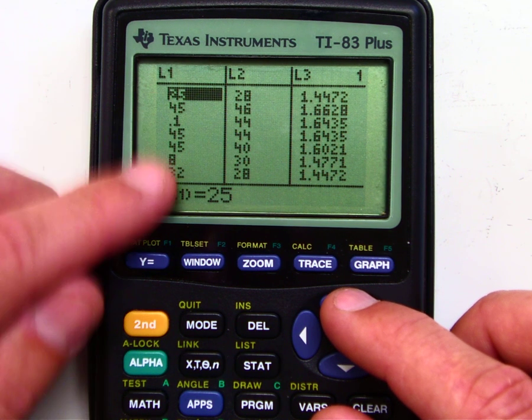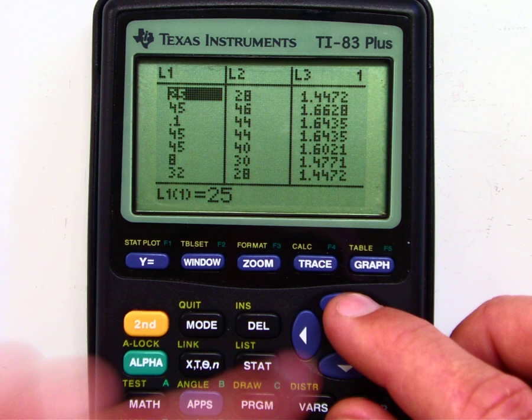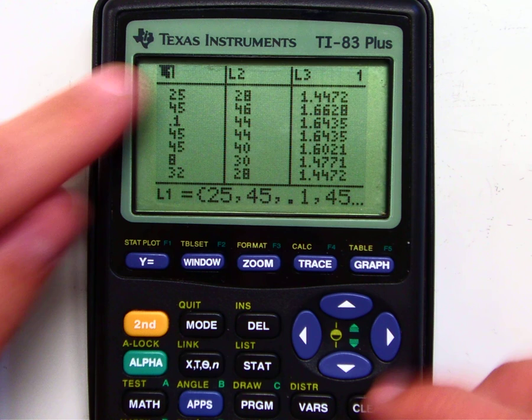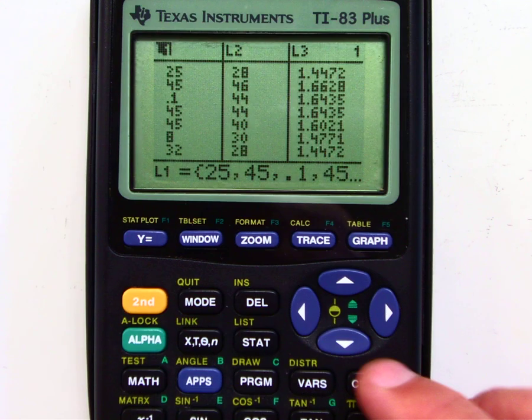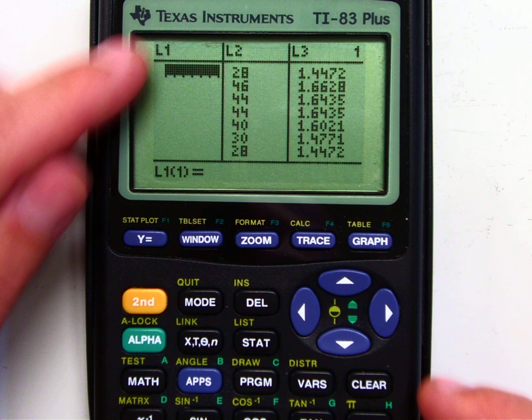So notice if I want to exit, I want to delete these numbers here. I just simply scroll up and highlight list one, and then hit clear right here. I just hit clear, and then enter. And what that will do is that will exit out everything there.